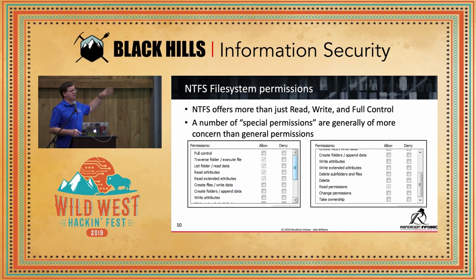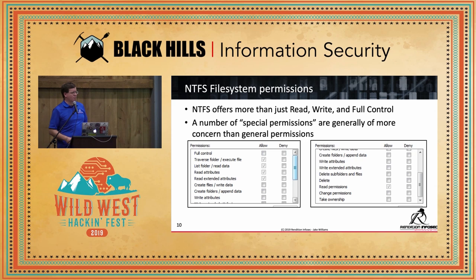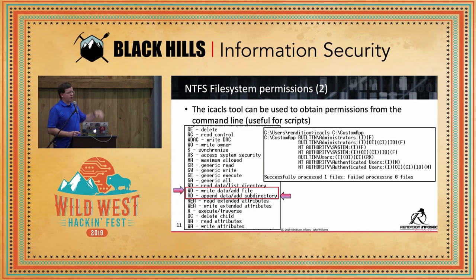If you have these permissions enabled on a directory where the built-in users group can write data, you can't overwrite a file — generic write permission allows you to overwrite existing files — these only allow you to add files or append data to an existing file. The problem with this showing up when looking at NTFS permissions is that you have to go into the Advanced view. At the bottom where it shows full control, write, etc., there's a checkbox that says Special Permissions — and if any special permissions are set, that checkbox shows up but doesn't show you which ones.